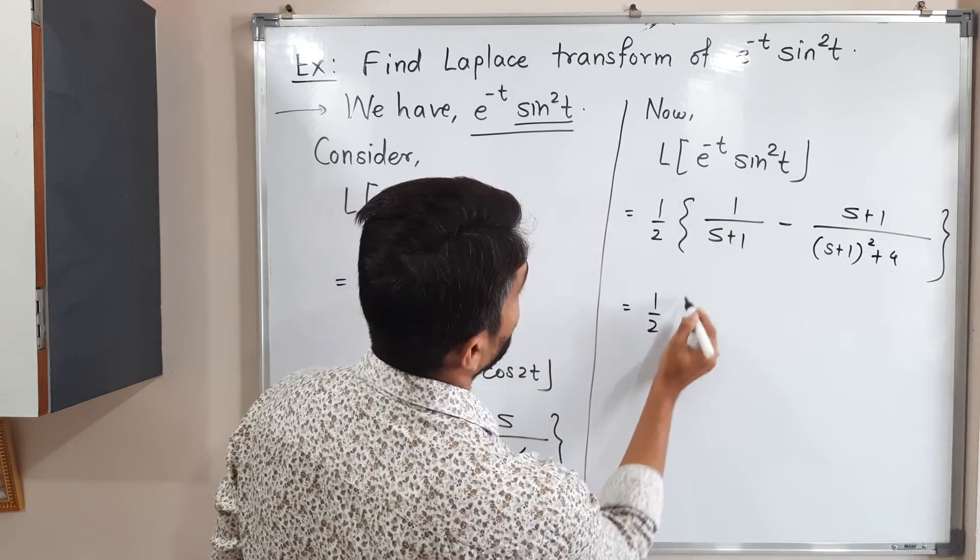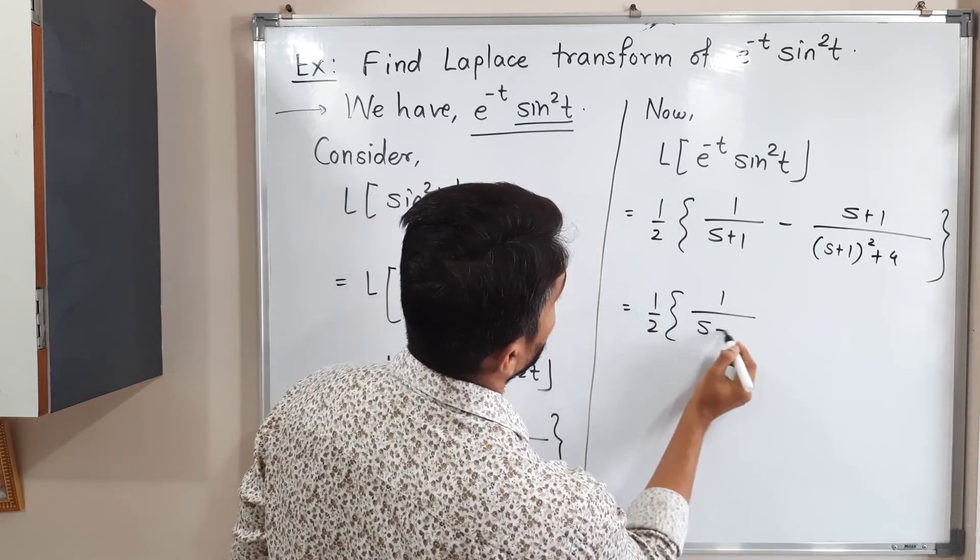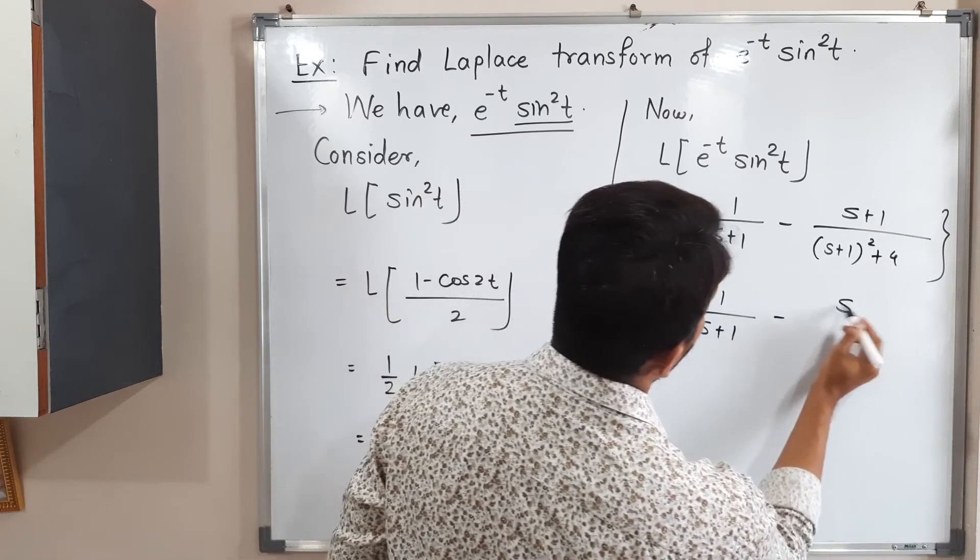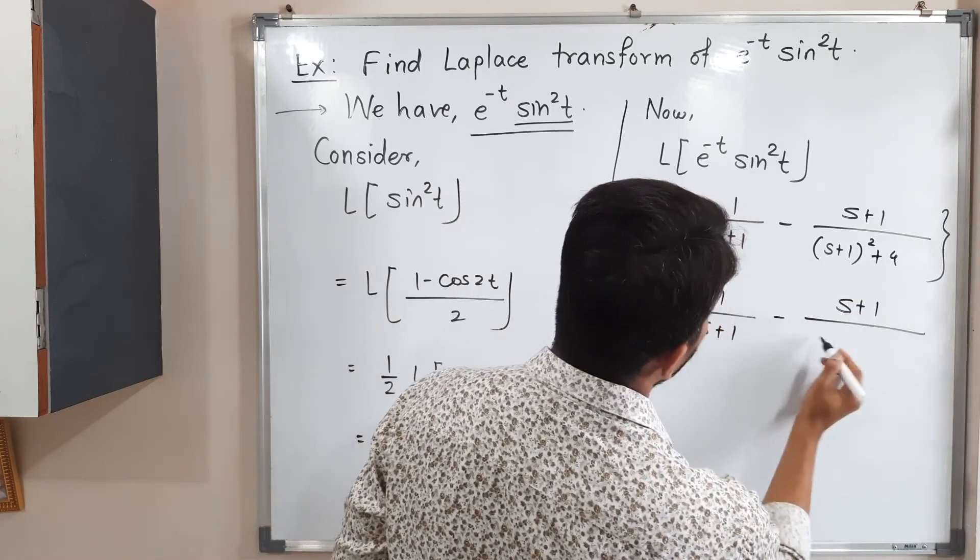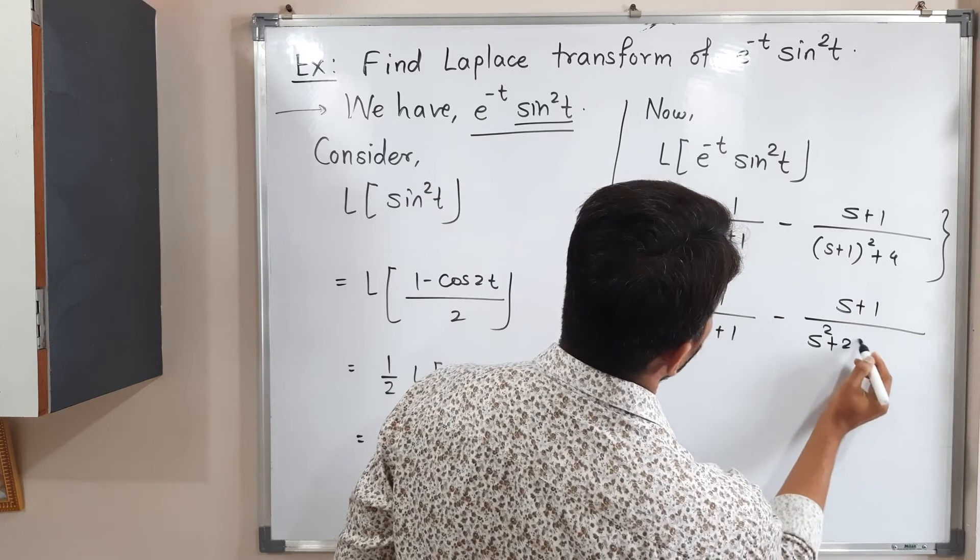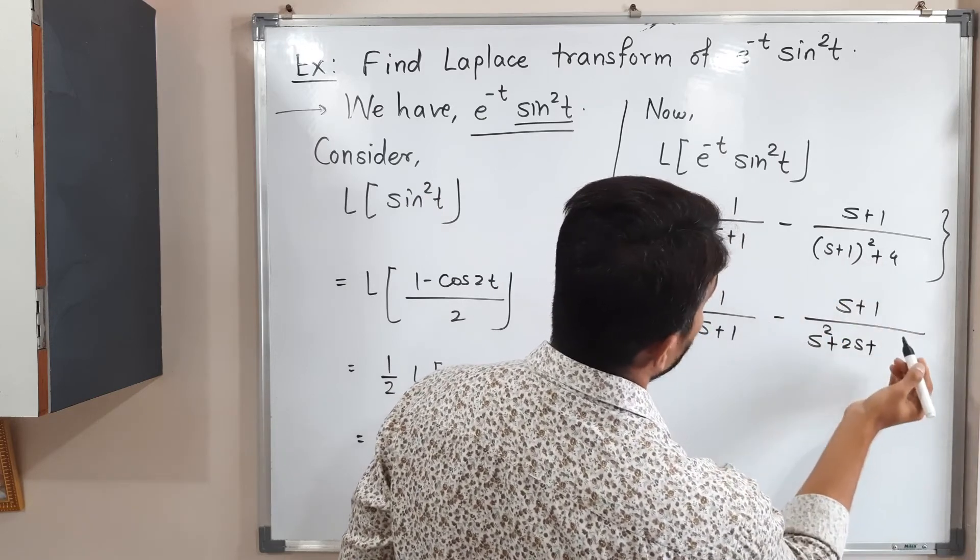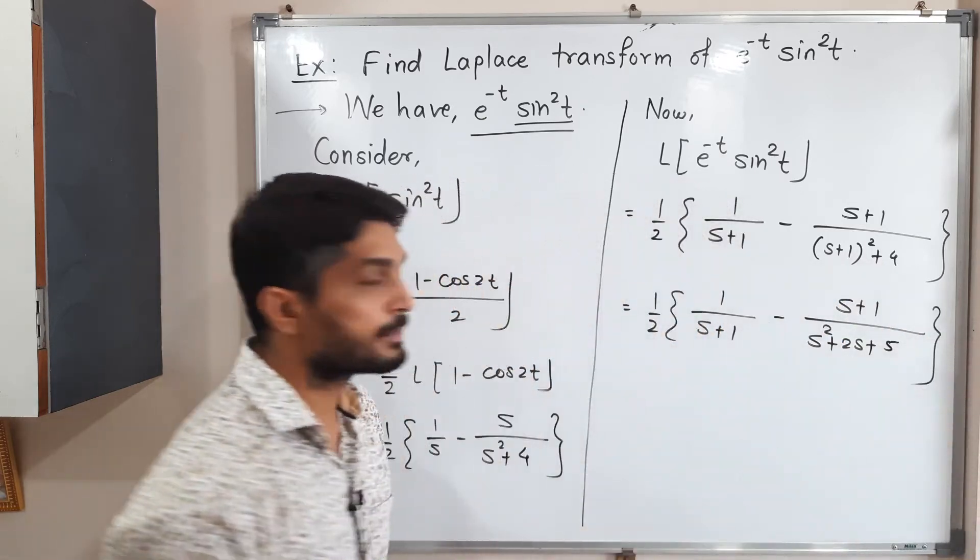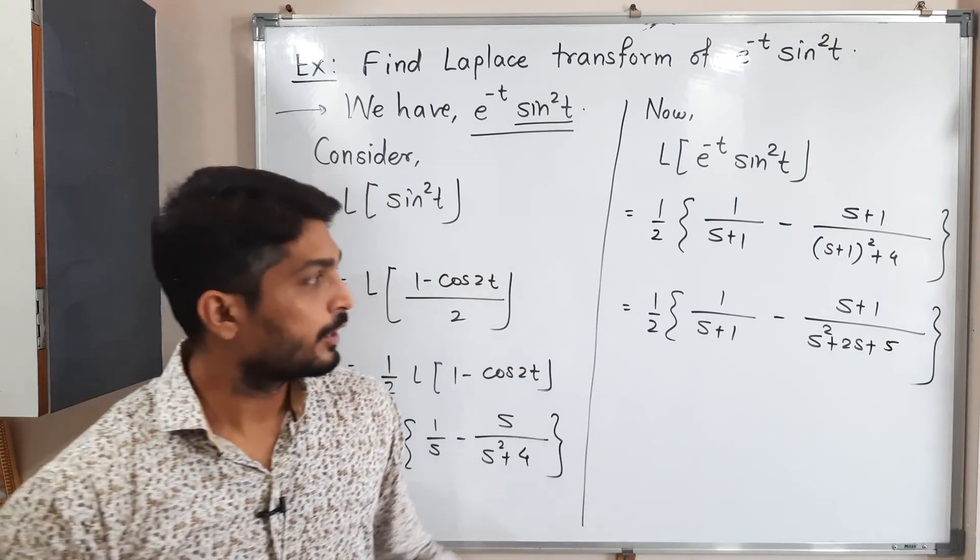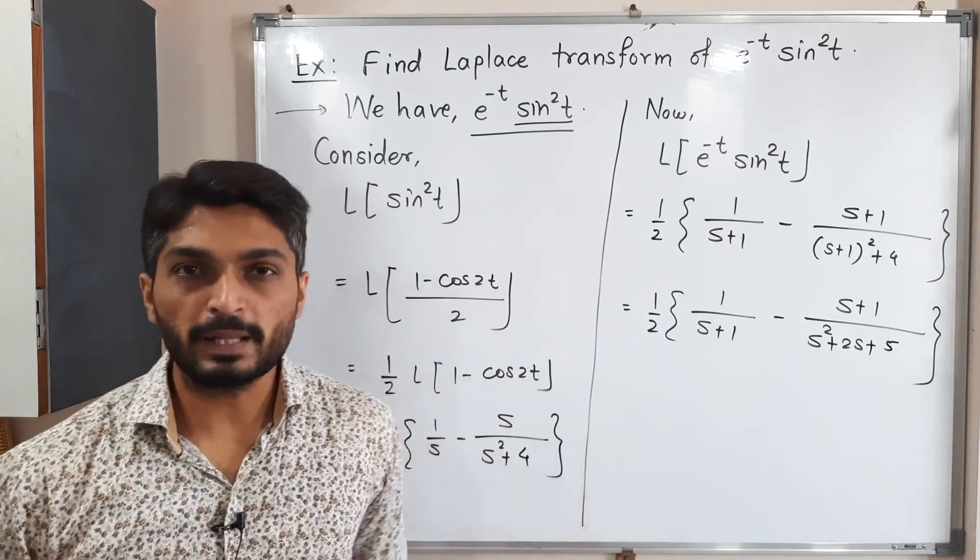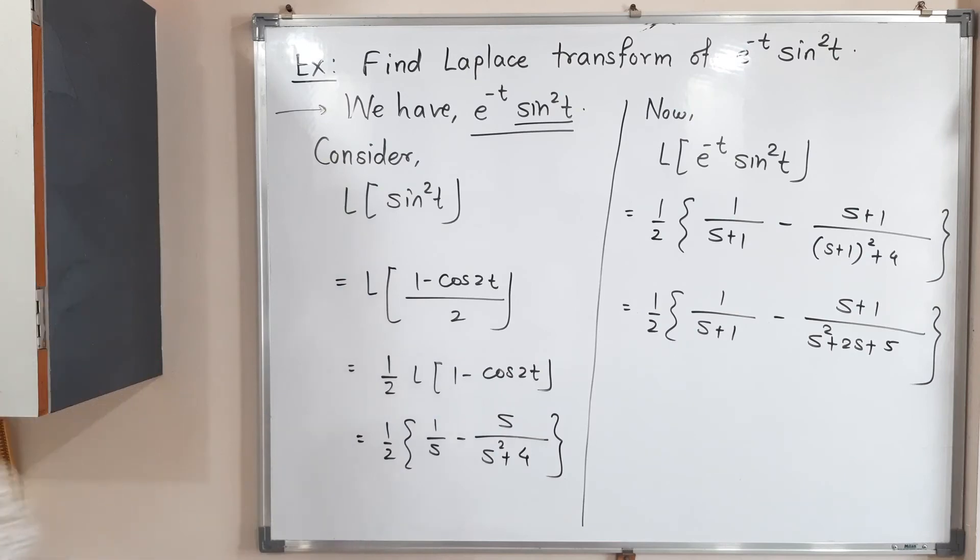So this is equal to one by two. Let me simplify it further. One upon s plus one minus s plus one. You can expand this bracket: s square plus two s plus one. One square is one plus four, five. So a plus b bracket square formula we use. You can further simplify by cross multiplying but you will have answer like this.